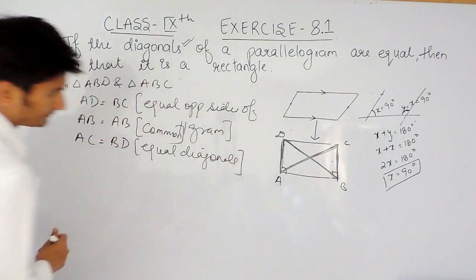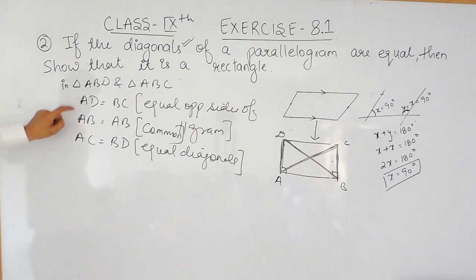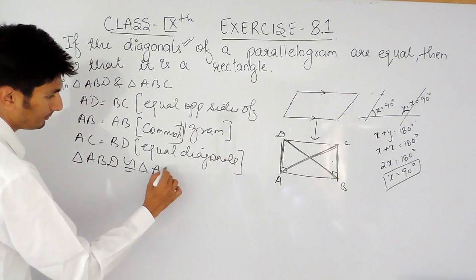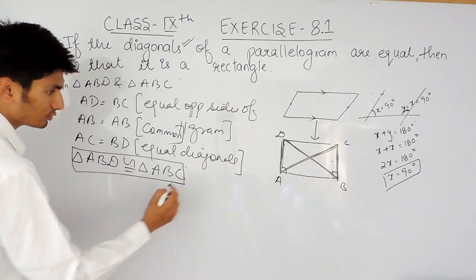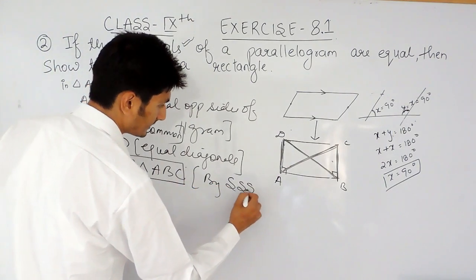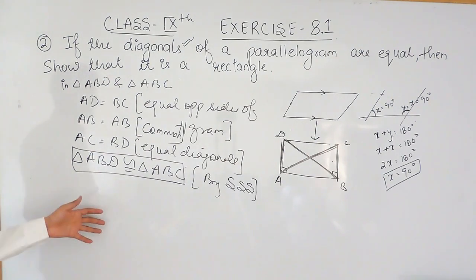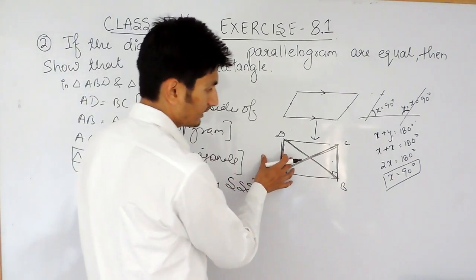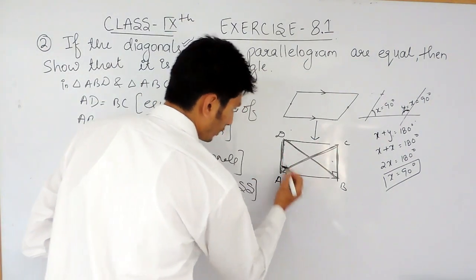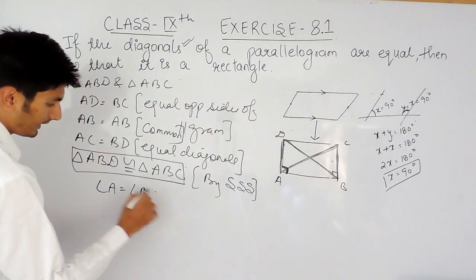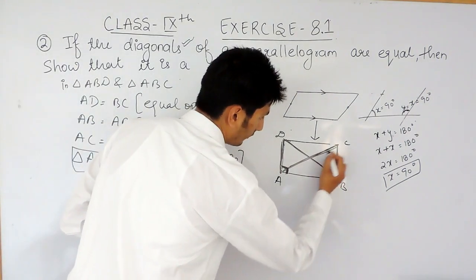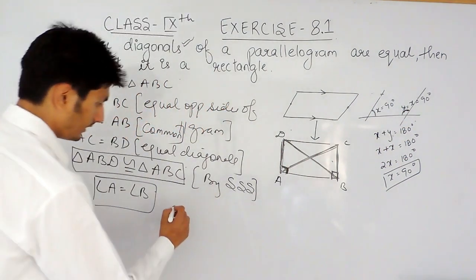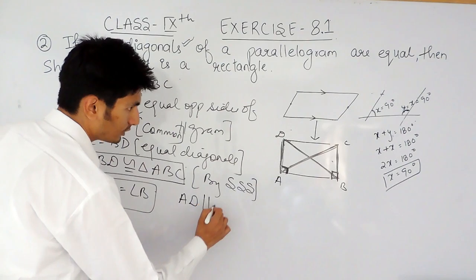Since triangle ABD is congruent to triangle ABC by SSS, by CPCT all corresponding parts are equal — so the three angles must also be equal. Therefore angle A of triangle ABD equals angle B of triangle ABC. Now since these two angles are equal and AD is parallel to BC with AB as a transversal, the sum of co-interior angles gives: angle A plus angle B equals 180 degrees.